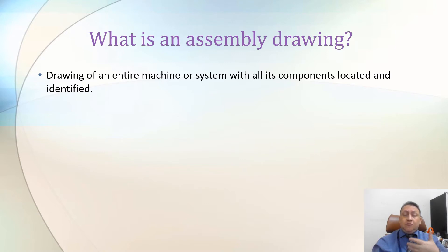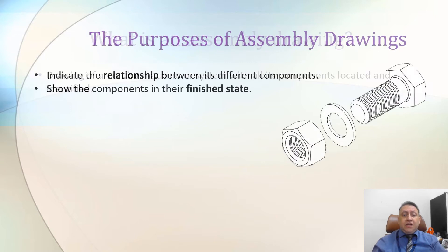We should understand the location of each part, and what's the relation between each part, and what are the parts. So the purpose of assembly drawing is to show the relationship between the parts and to see the parts in their finish final shape.